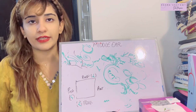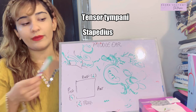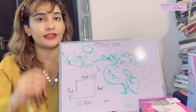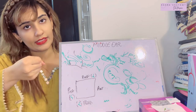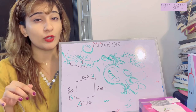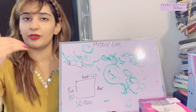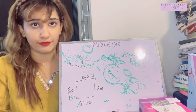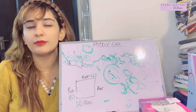The only two muscles within the middle ear are the tensor tympani and the stapedius. The tensor tympani originates from the canal of the tensor tympani and inserts on the handle of the malleus, keeping the tympanic membrane tense. It is supplied by the mandibular nerve. The stapedius inserts on the neck of the stapes and is supplied by the facial nerve.